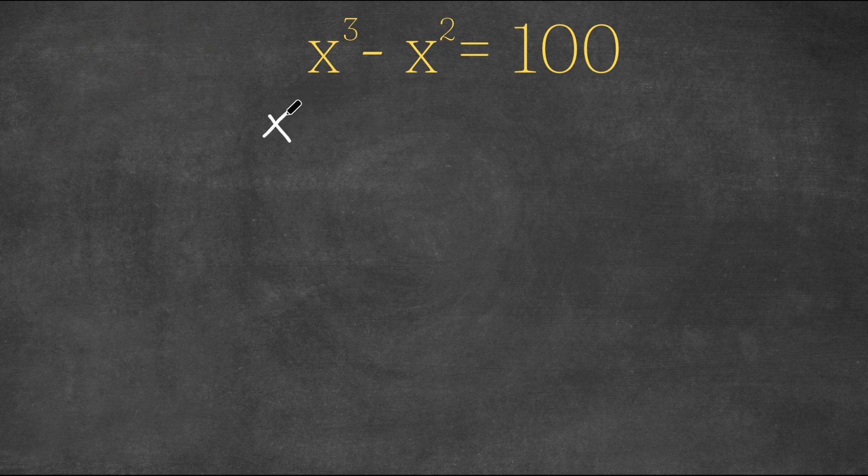So if we factor out x squared, x to the power of 3 divided by x squared, well, that's x to the power of 3 minus 2, which is x.